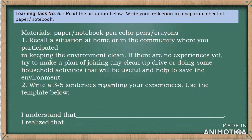Learning Task Number Five: Read the situations below, then write your reflection in a separate sheet of paper or notebook. Materials needed: paper or notebook, pen, and color pens or crayons. Number one: recall a situation at home or in the community where you participated in keeping the environment clean. If you have no experience yet, make a plan to join a clean-up drive or do household activities useful to save the environment. Number two: write three to five sentences about your experiences using the template: 'I understand that...' and 'I realize that...'